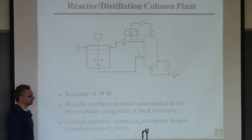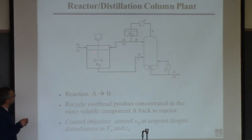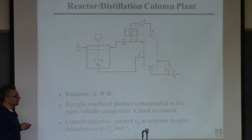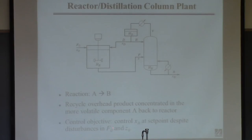The objective of this plant is to make B. What we're interested in for product quality is the composition of the bottom stream — we want to produce B at high purity. So the main thing we want to control is the composition of B here. In this scenario, the flow rate and composition of the feed to the reactor are treated as potential disturbances.